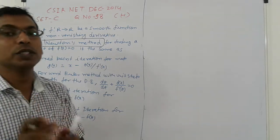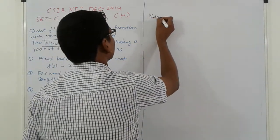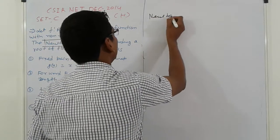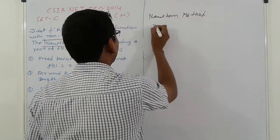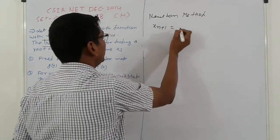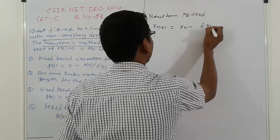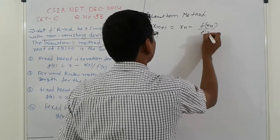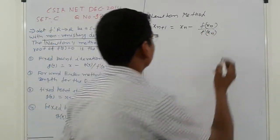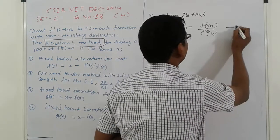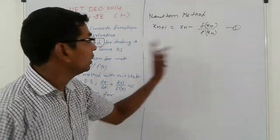First, what are Newton's methods? From here, X_{n+1} is equal to X_n minus f(x_n) divided by f'(x_n). That is Newton's method — this is option one.